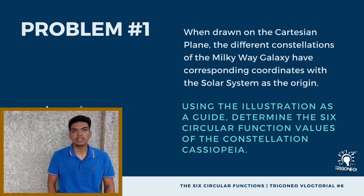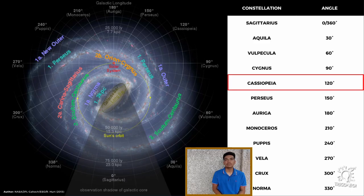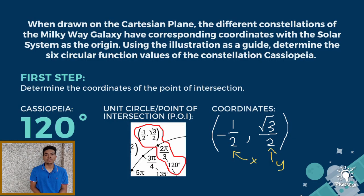When drawn on the Cartesian plane, the different constellations of the Milky Way galaxy have corresponding coordinates with the solar system as the origin. Using the illustration as a guide, determine the six circular function values of the constellation Cassiopeia. To recap, the first step in solving for the six circular function values is to determine the coordinates of the point of intersection. Based on the illustration, Cassiopeia is at 120 degrees. Thus, 120 degrees, or 2π over 3, has coordinates of negative 1/2 and positive square root of 3 over 2.